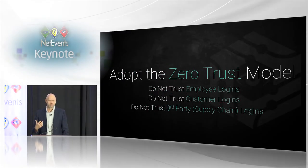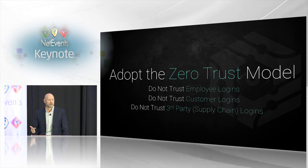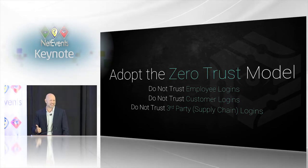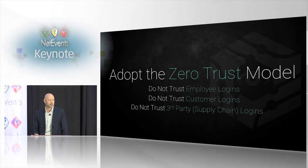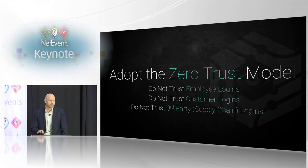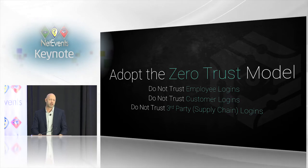I don't trust anything that I receive — email or texts. I don't trust anything from my spouse, especially my spouse. I don't trust anything from my board of directors or from coworkers. It seems like it's a very difficult position to operate in, but if you strive for a zero trust model, you will be safer.